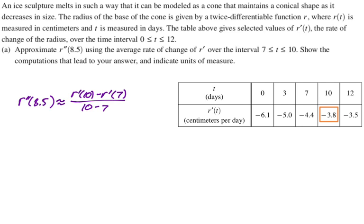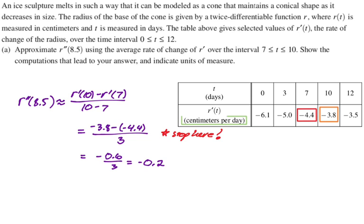We just have to pull values from the table. So r prime of 10 is negative 3.8, r prime of 7 is negative 4.4. In recent years they've been using a lot of decimals on the non-calculator section as if to emphasize that you don't have to simplify and maybe you should never try to simplify these numerical values. So our calculation is going to be negative 3.8 minus negative 4.4 over 3. According to the rules, we do not need to simplify that. Just leave that and throw your units on it. If you don't stop there, you do get negative 0.6 divided by 3, which is negative 0.2. Our units are going to be the units of r prime, which are centimeters per day, divided by the units of time, which are days. So I'm going to write that as centimeters per day, per day.